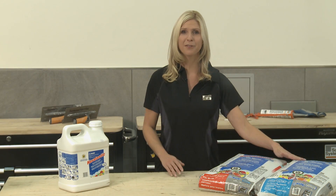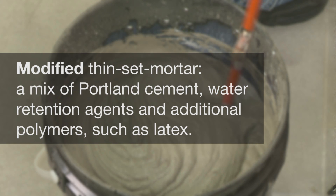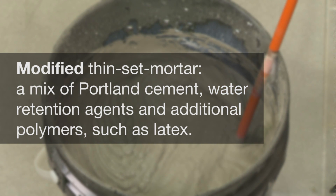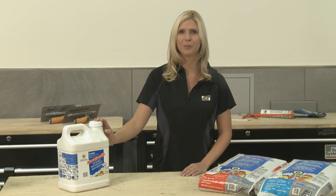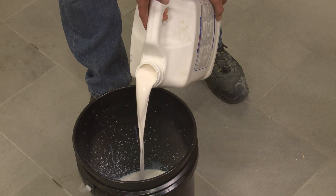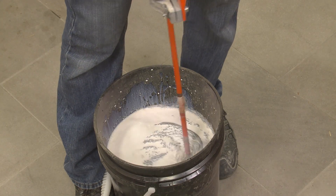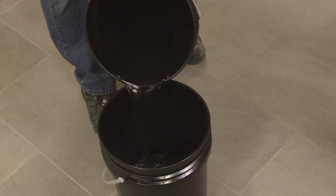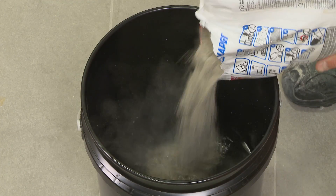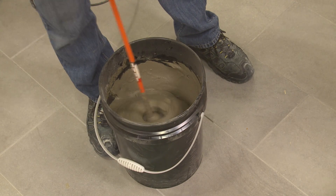Now let's move on to modified thinset mortar. Modified thinset mortar is similar to unmodified thinset mortar but includes additional polymers such as latex. The additional polymers are introduced in either liquid or powder form. In the first case, the user mixes an unmodified or dry set mortar powder with a liquid polymer additive instead of water. In the second case, the polymers are added by the manufacturer to the dry blend in powder form. The user then mixes the powder with water.